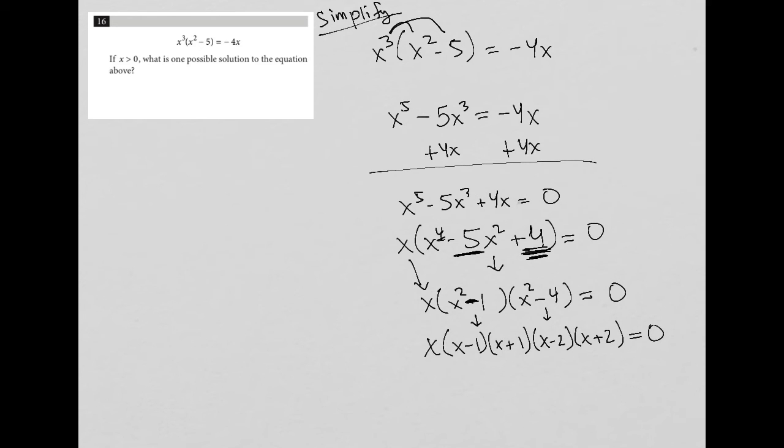So once you've fully factored a polynomial and you have it equal to 0, we can start solving. Realistically, I don't need to do all of this because it's not school and I don't have to show all my work. But x would equal 0, x would equal 1, negative 1, positive 2, and negative 2. It's just always the opposite sign of whatever's inside these binomials. The question just wants one possible solution.